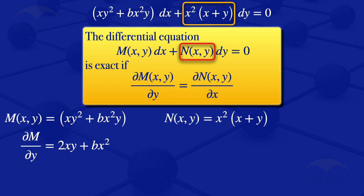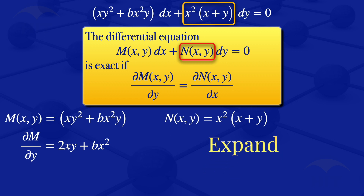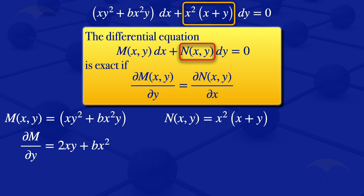I can go on and expand that since we will need to take the partial derivative. It's easier to evaluate the partial derivative when expanded. Multiplying throughout by x² gives us x³ + x²y.